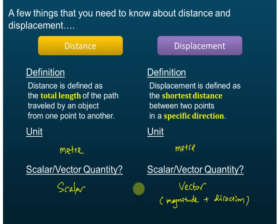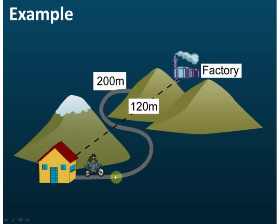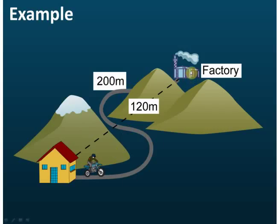Now let's look at an example. There is a man who works in a factory, and every day he travels from his house to the factory. The length of the path he travels is 200 meters. This 200 meters is the distance — the total length of the path traveled by this man from his house to the factory.